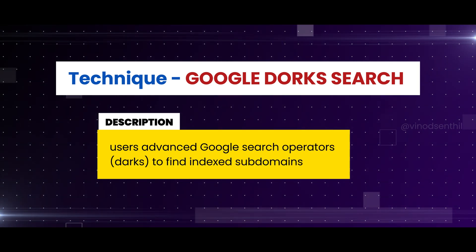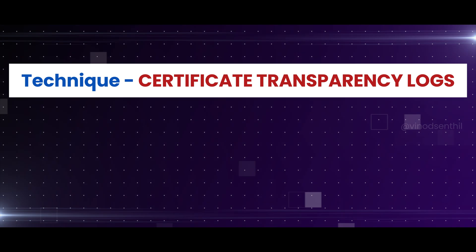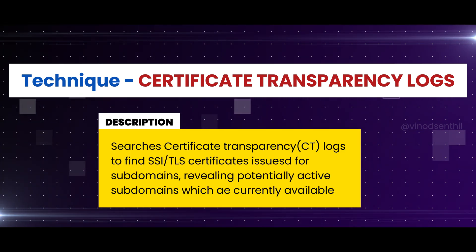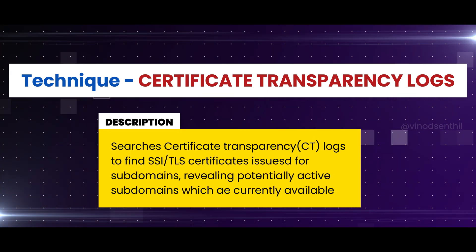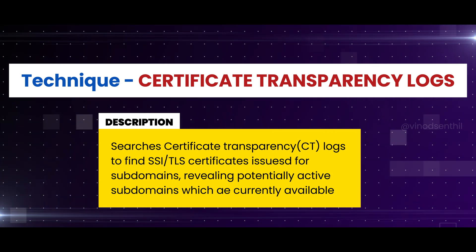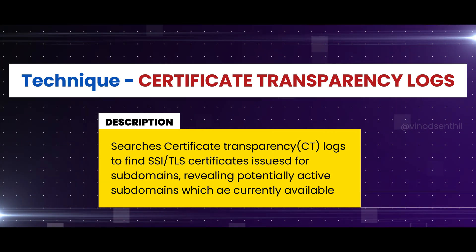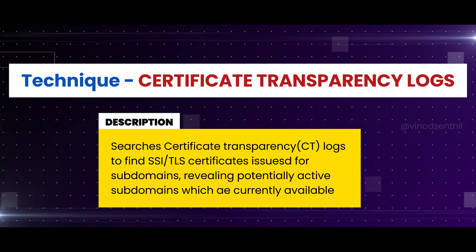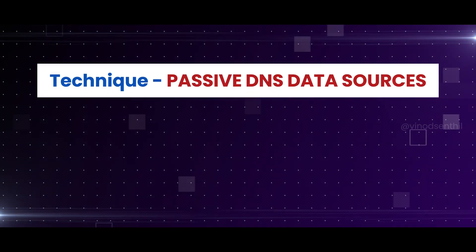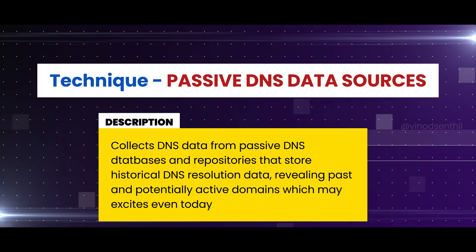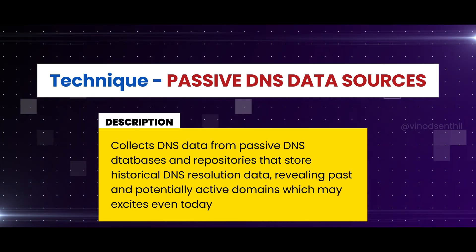Number five: certificate transparency logs — searches certificate transparency logs to find SSL or TLS certificates issued to subdomains, revealing potentially active subdomains currently available.